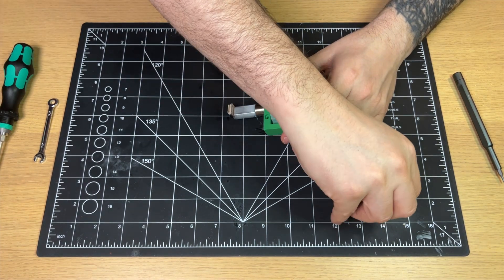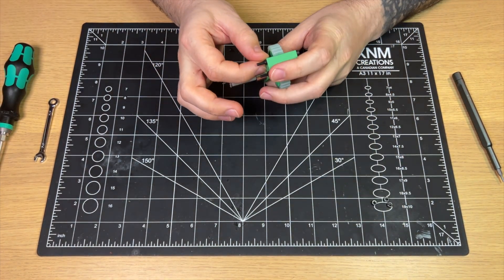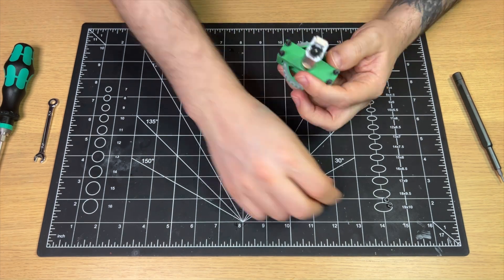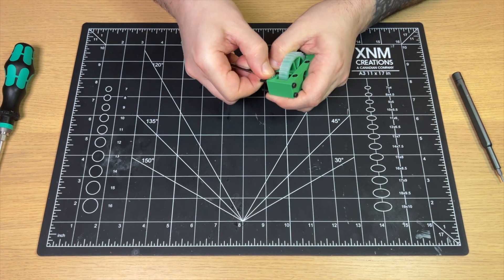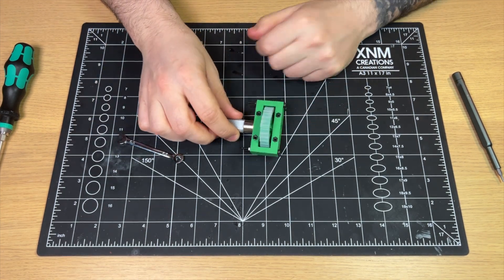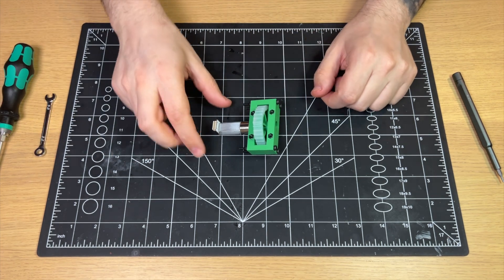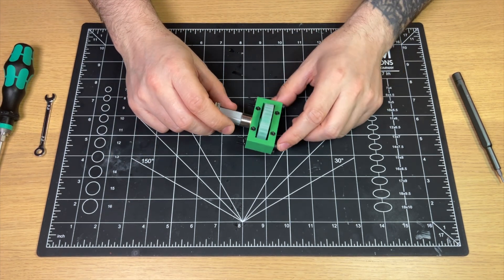And now, for the final step, pushing four M3 nuts to mount this assembly onto the robot chassis. I'm using a small wrench to ensure that everything is secured in place. And there we have it. The final result looks great.